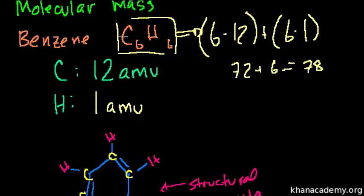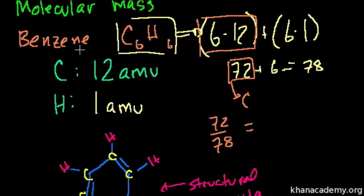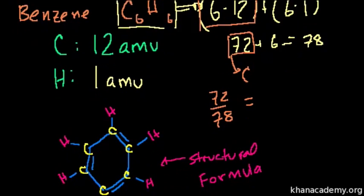Now, what if someone said, what percent of benzene is carbon? Well, then you say, OK, the carbon piece of benzene is 72 atomic mass units. So what percentage of benzene is carbon? Well, it's 72 over 78. So benzene is 92.3% carbon by mass. And of course, the remainder, the 7.7%, is going to be hydrogen.